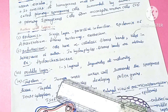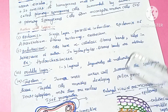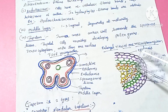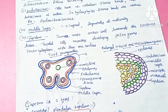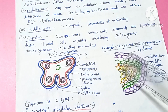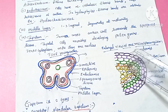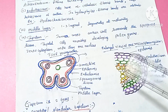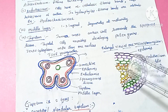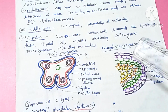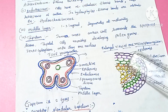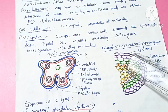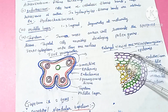The middle layer consists of 1 to 3 layers and degenerates during maturity. The innermost layer is the tapetum, which surrounds the sporogenous tissue. The sporogenous tissue will generate pollen grains in the future, and the tapetal cells nourish these developing pollen grains by providing food.